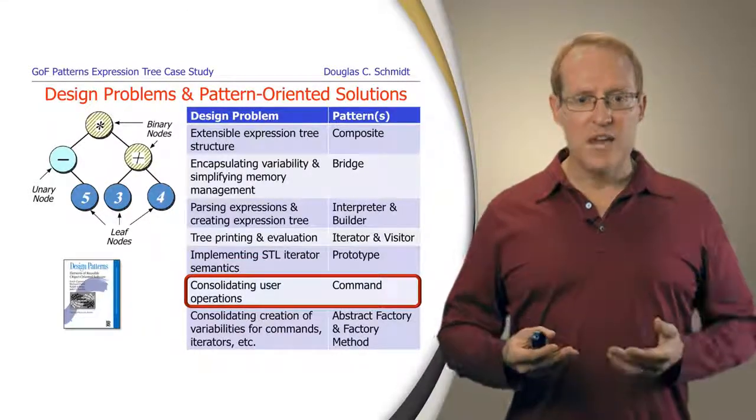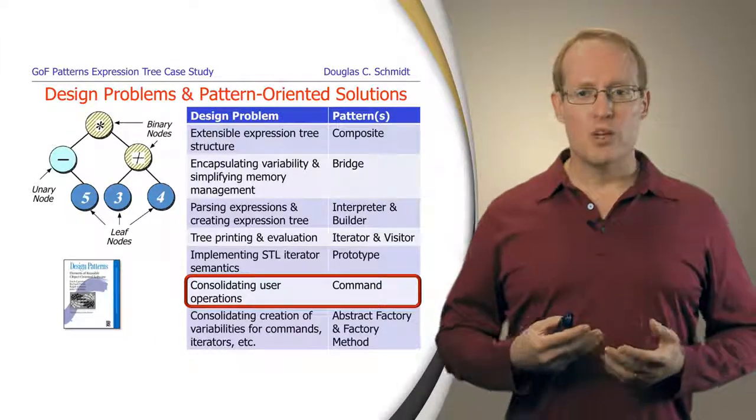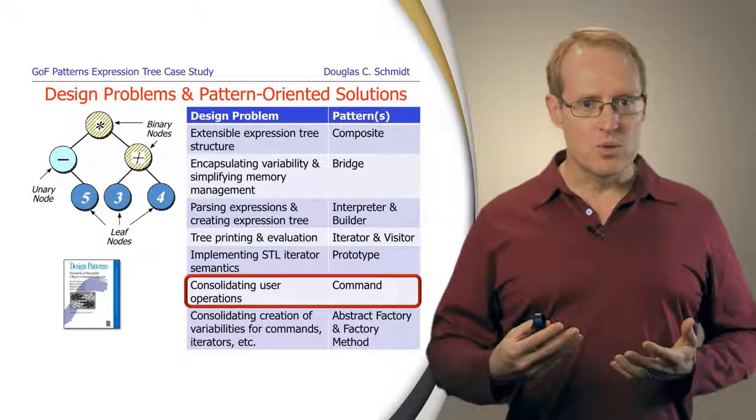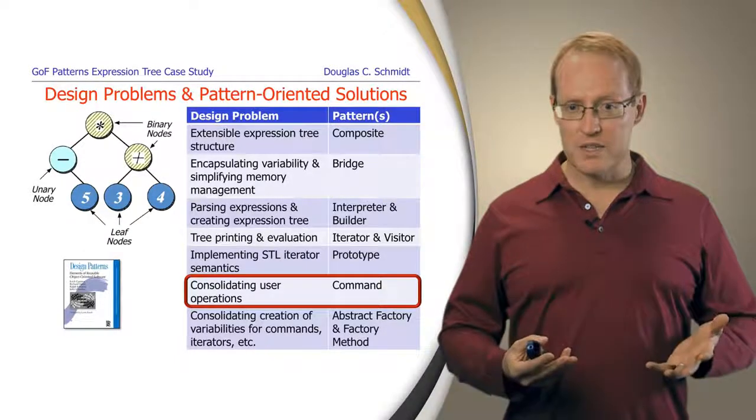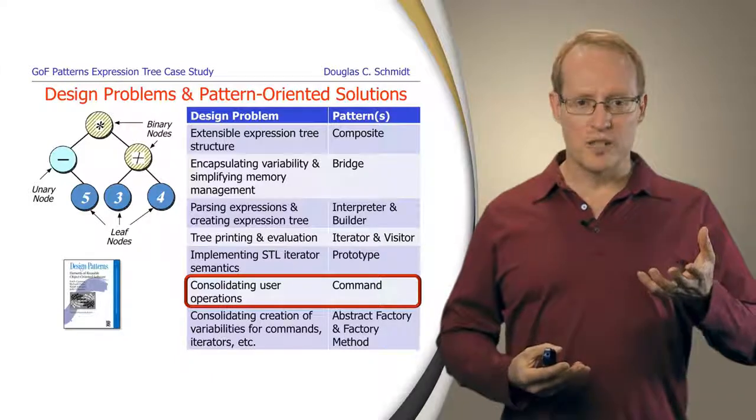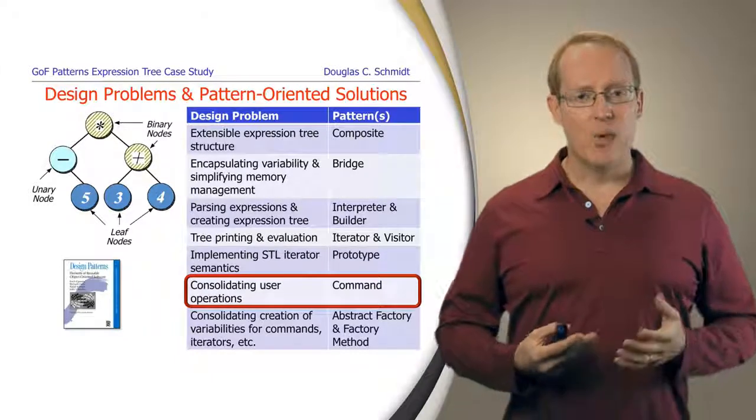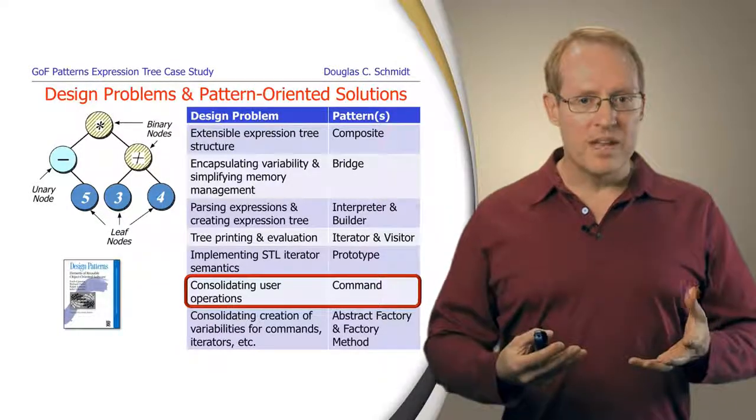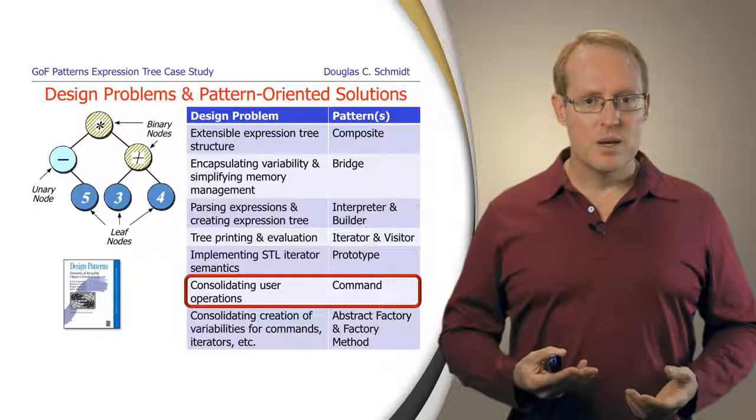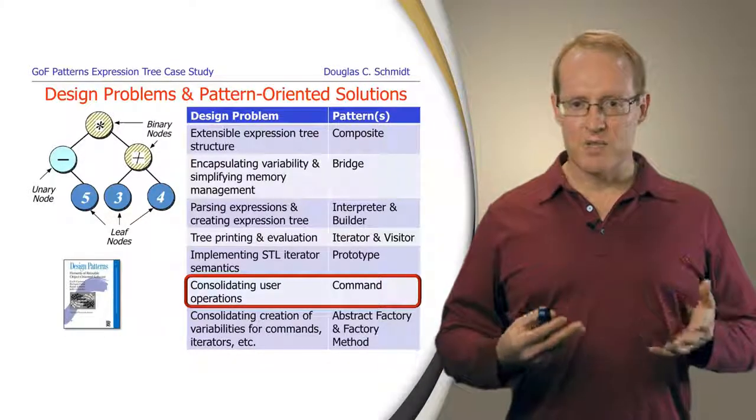When we start building out the application, there's more to it than just the expression tree and creating the expression tree. We'd also like to have a way of being able to let users interact with our program by being able to invoke various kinds of commands. So, do things like create a tree, print a tree, evaluate the tree, and so on. And we're going to consolidate all those different commands and unify them in a single generic interface by applying the Gang of Four command pattern, which can be used to simplify command access.